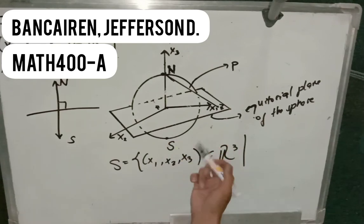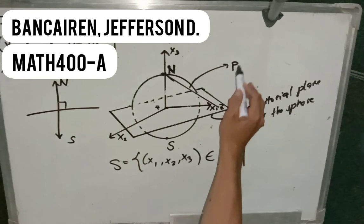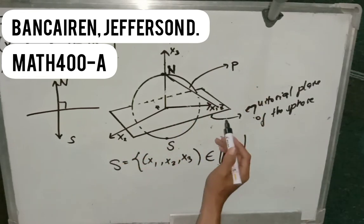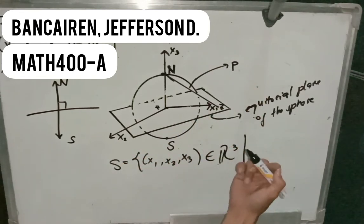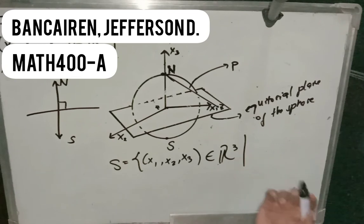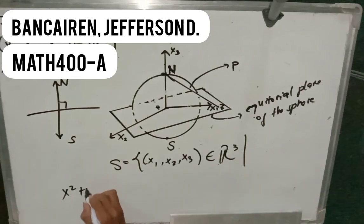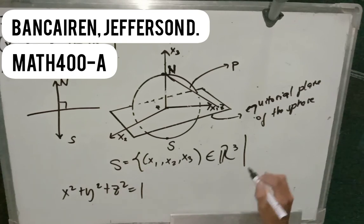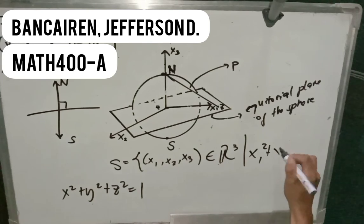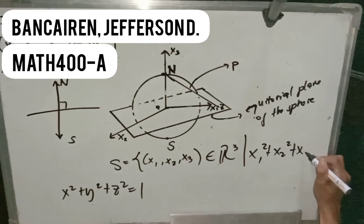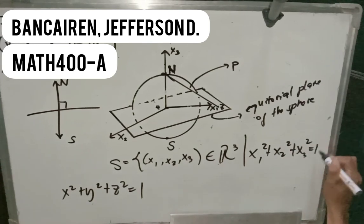And we also know that the point P here lies on the sphere, so it will basically satisfy the general equation of the sphere, which is X squared plus Y squared plus Z squared equals 1. So basically, it will also satisfy this condition, which can be written as X sub 1 squared plus X sub 2 squared plus X sub 3 squared, which equals 1.